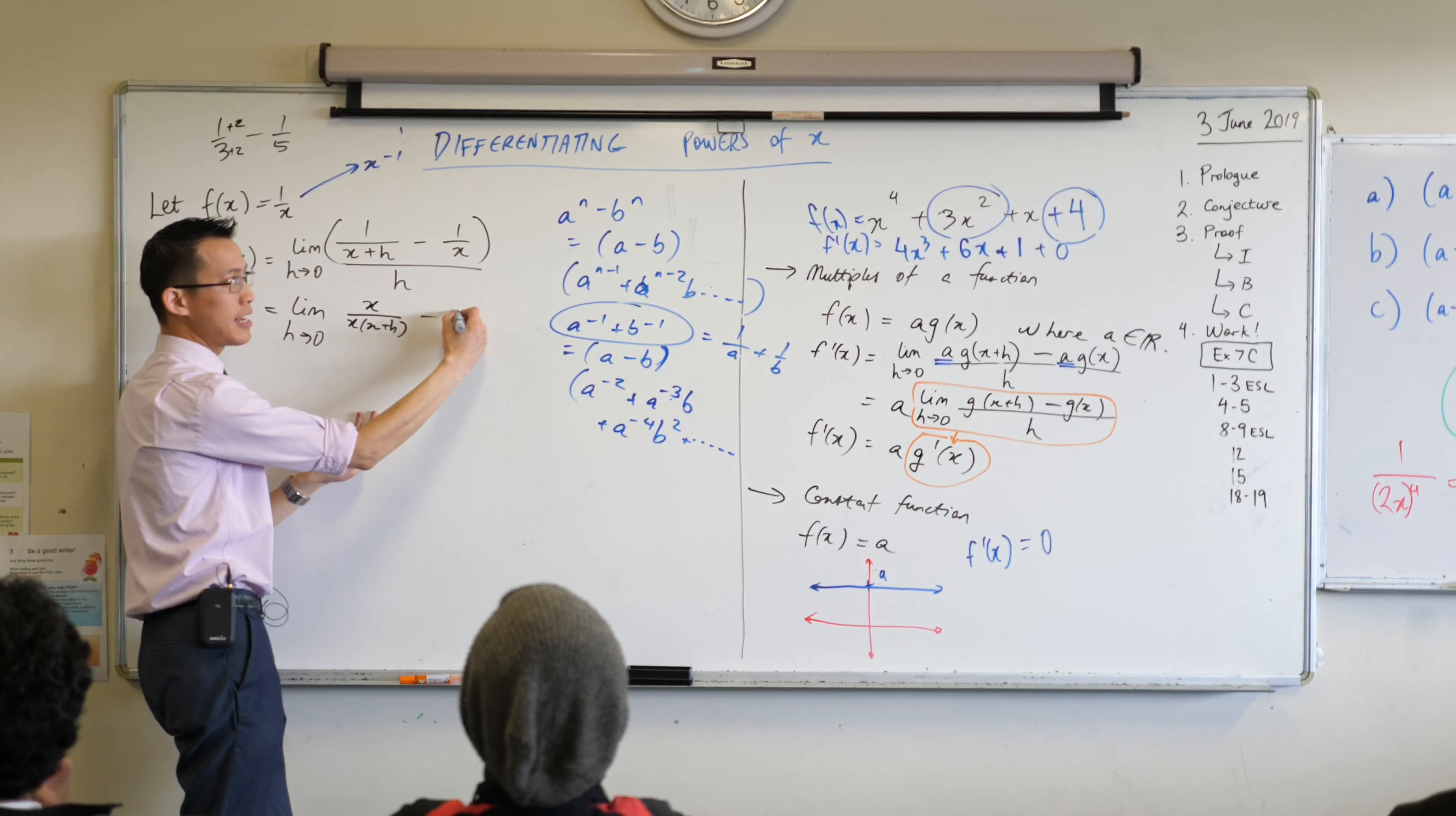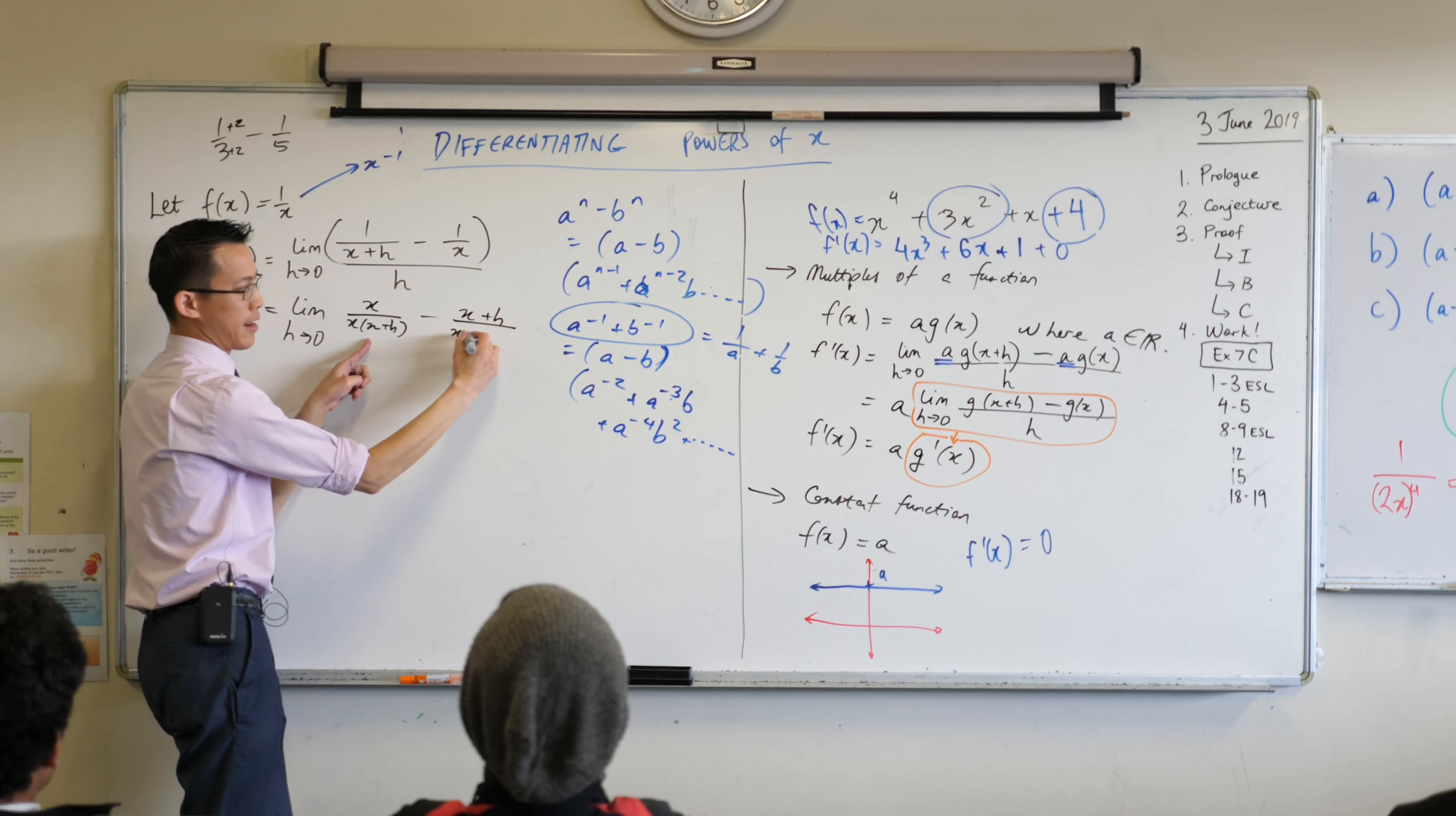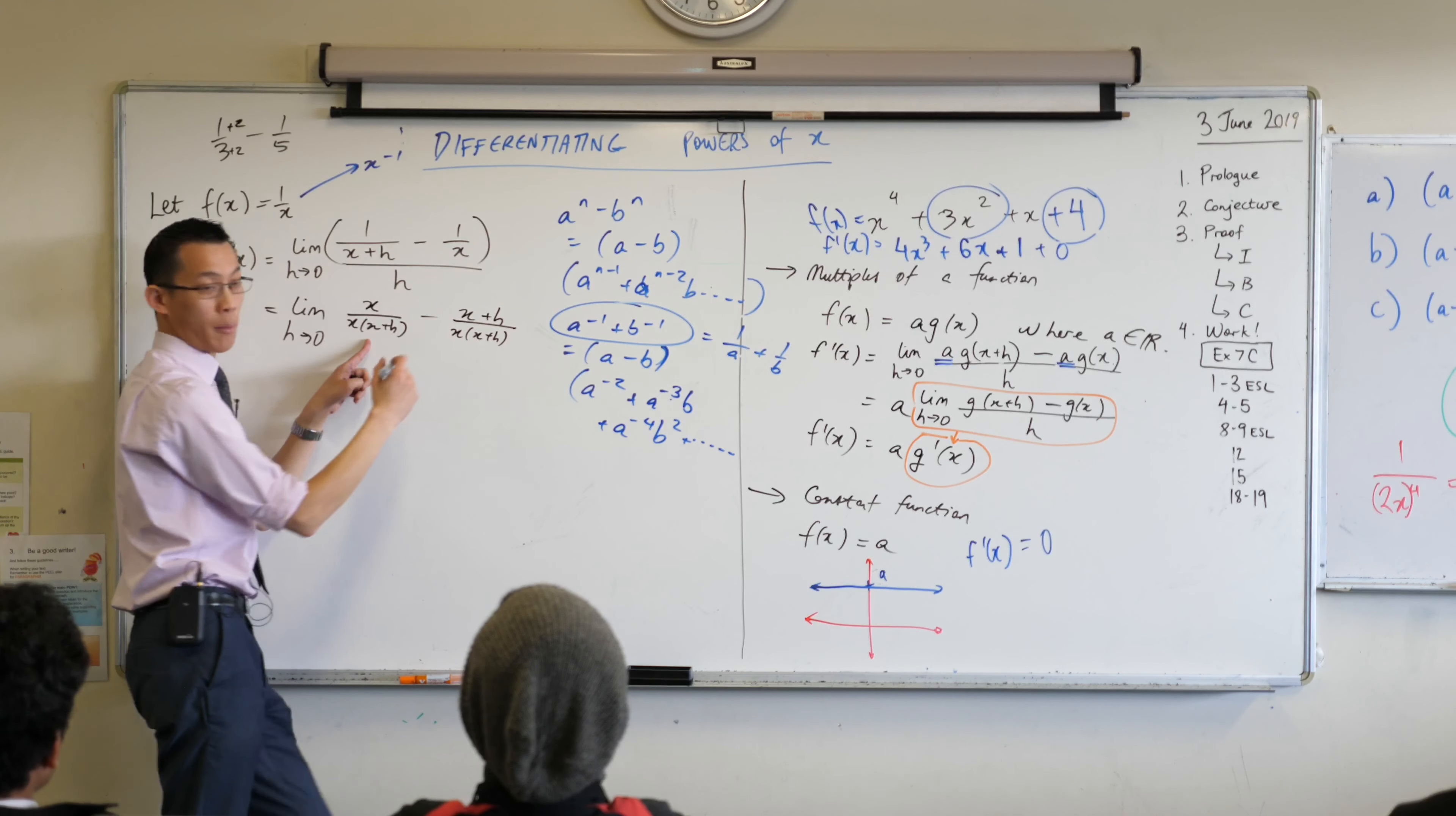And then instead of multiplying this by x over x I'm gonna multiply by x plus h over x plus h, because I haven't changed the fraction. So that leaves me with x plus h over the same denominator. That was the whole point, right? Common denominator.